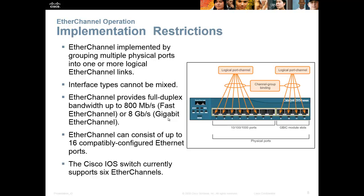You can create multiple channels — each switch supports six channels, but each channel only supports up to eight ports. Cisco can get confusing when they say each EtherChannel can consist of up to 16: what they mean is eight on one end of the switch and eight on the other end of the other switch. So eight ports going into eight ports equals 16. The ports have to be the same, the speed has to be the same, and the duplex setting has to be the same — which is another reason we set the duplex setting manually and don't leave it on auto.